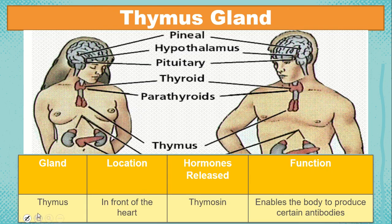The other one, we have the thymus, located in front of the heart. It releases hormones called thymosin, or T-lymphocytes, which stimulate the maturation of cells for the immune system, meaning it enables the body to produce certain antibodies.